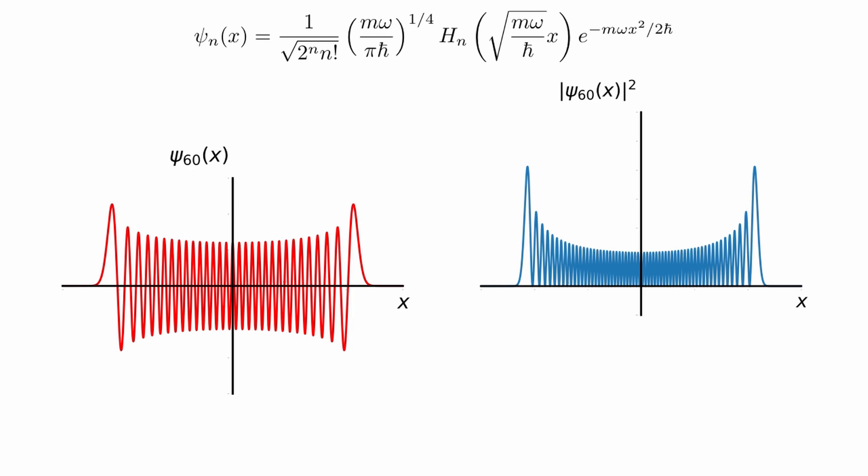Here I have the ground state, first and second excited states in the first row, and three more excited states in the second row. As n increases we get more zeros in the wavefunction, because it is given by a polynomial of increasing order. You can also see the parity properties of each wavefunction pictorially. For a very large value of n — in this case n equals 60 — the probability density approaches a limit where the particle is most likely found at the extremes of the harmonic potential, consistent with the classical limit where the turning points are where a classical particle spends the most time.